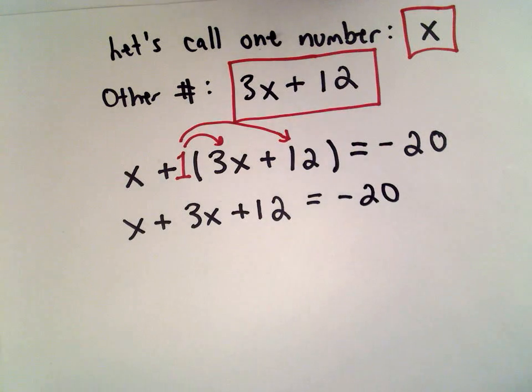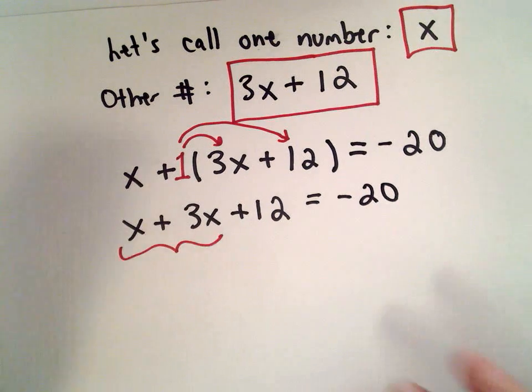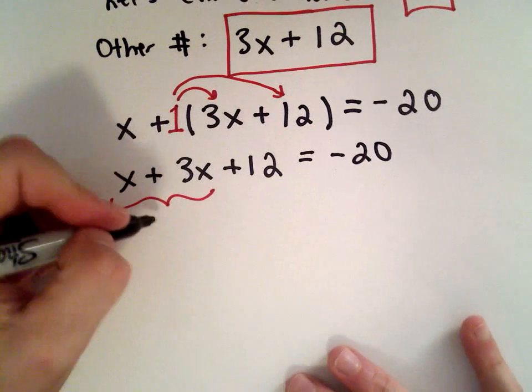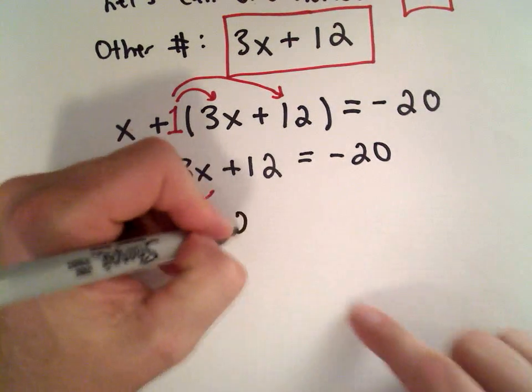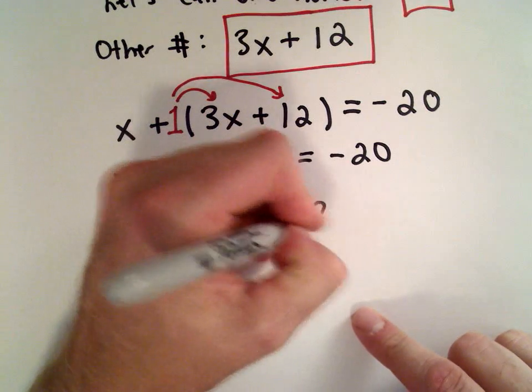I can combine some like terms. I've got an x and a positive 3x—those are like terms. So 1x plus 3x gives me 4x. I still have my positive 12. That equals negative 20.